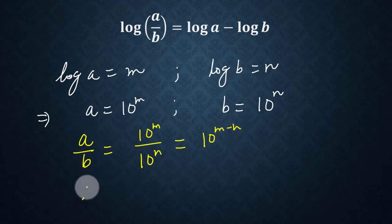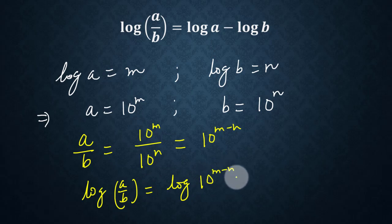Taking log on both sides, we get log(a/b) equals log 10 to the m minus n, which is equal to m minus n.